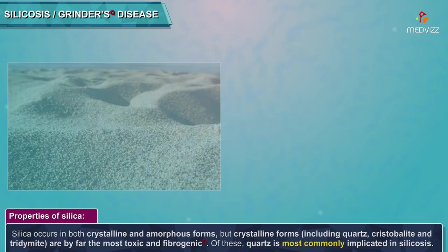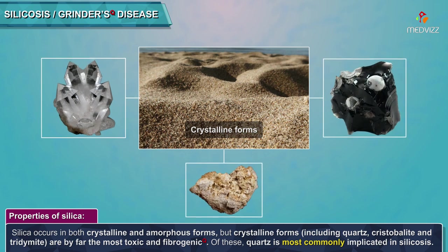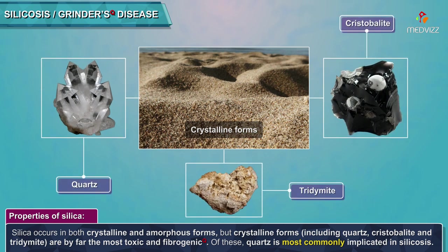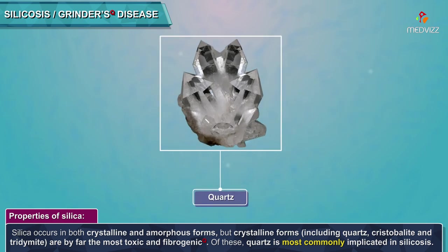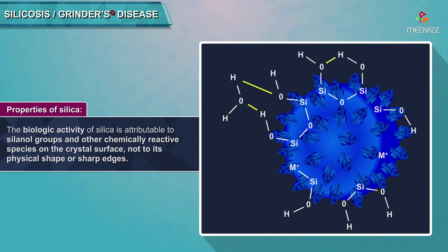Silica occurs in both crystalline and amorphous forms, but crystalline forms — including quartz, cristobalite, and tridymite — are by far the most toxic and fibrogenic. Quartz is the most commonly implicated in silicosis. The biologic activity of silica is attributable to silanol groups and other chemically reactive species on the crystal surface, not to its physical shape or sharp edges.